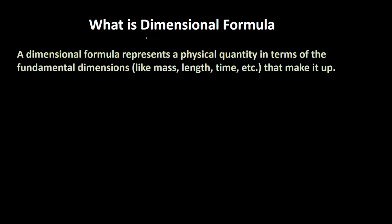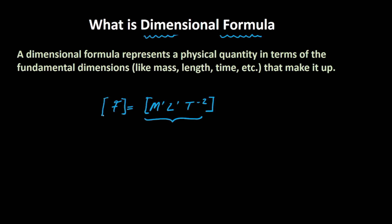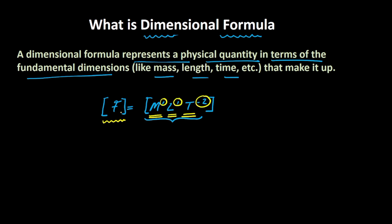Let's also understand what a dimensional formula is. Force can be represented as M raised to the power 1, L raised to the power 1, T raised to the power negative 2. This is called the dimensional formula for force. A dimensional formula represents the physical quantity in terms of fundamental dimensions like mass, length, and time. The exponents are called the dimensions — so the dimension of force is 1 in mass, 1 in length, and negative 2 in time.